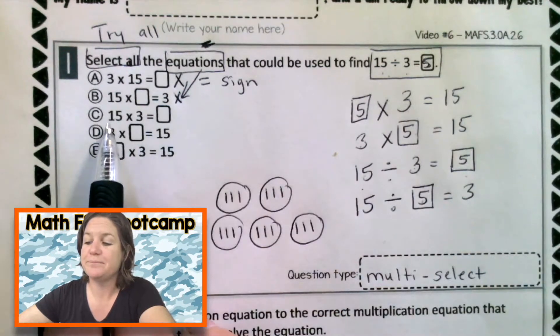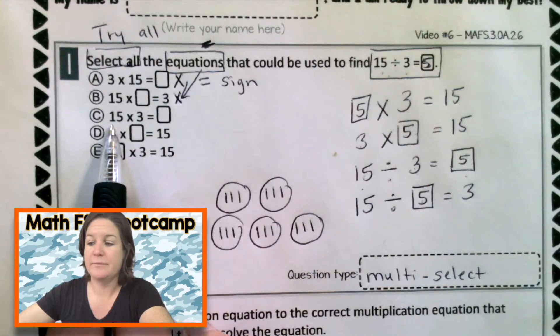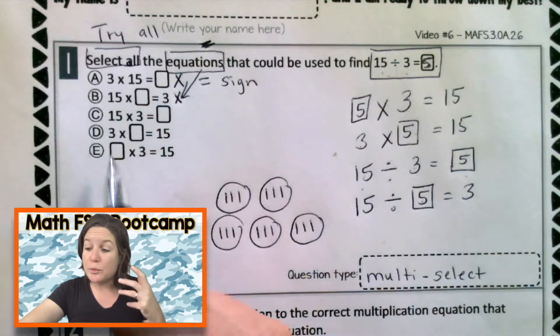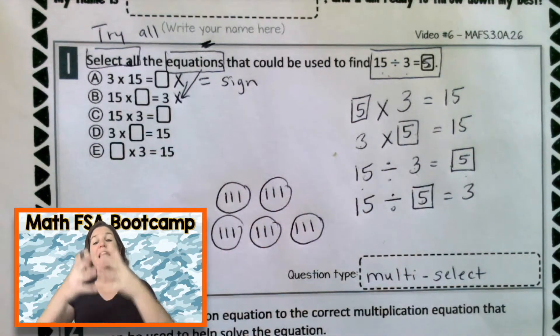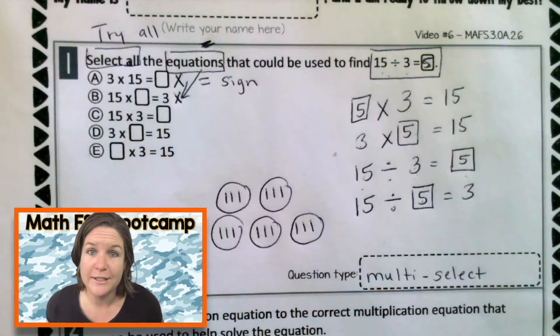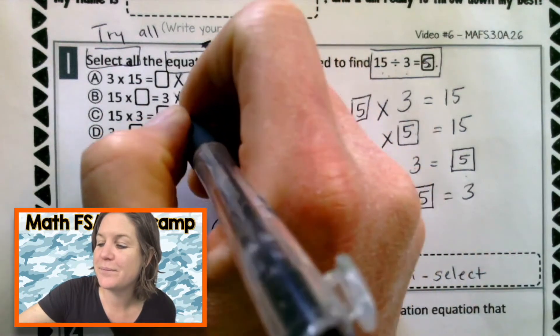Let's look at choice C. 15 times 3. Again, if we have 15 groups of 3, it's going to be way higher than 5. So what can we do with choice C? Eliminate it. That's right.